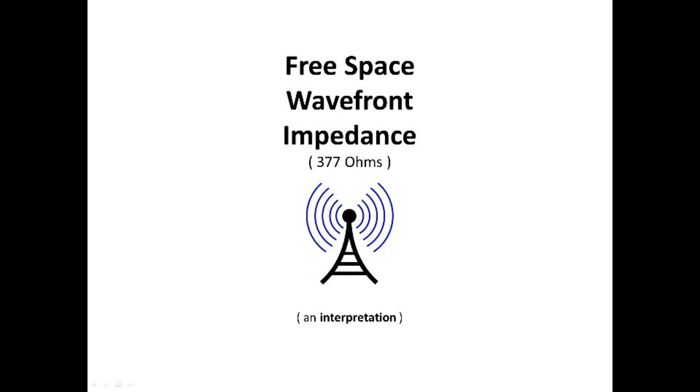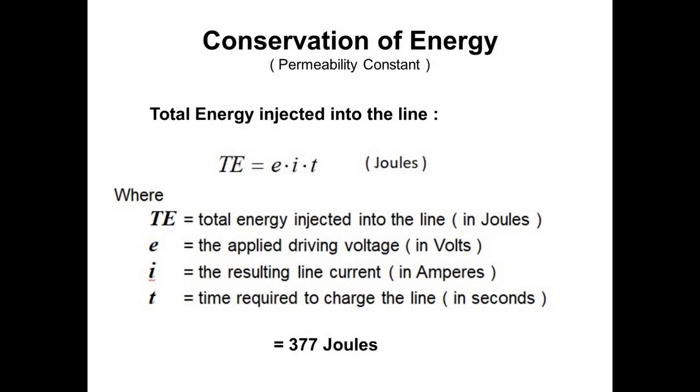By accounting for all the energy in this example, we can also derive the value for the permeability constant of empty space. In this example, the total energy injected into the line is given by this equation. Te equals E times I times T expressed in joules, where Te is the total energy injected into the line expressed in joules, E is the applied driving voltage in volts, I is the resulting line current in amperes, and T is the time required to charge the line in seconds. In this case, the total energy is equal to 377 joules.